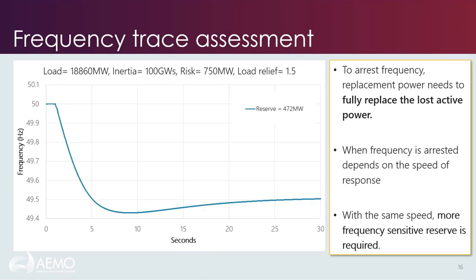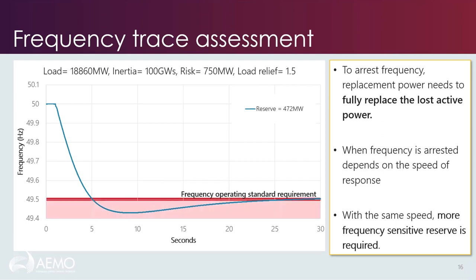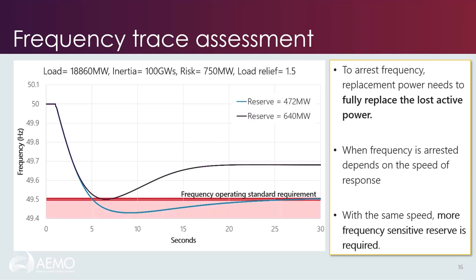From this model, we obtain a frequency response of the system, assessed against the frequency containment requirements of the Frequency Operating Standard, or FOS. Frequency was arrested on one particular run as we had enough reserve to fully replace the active power lost during the event. However, the curve drops into the red zone below the FOS requirement of 49.5 hertz before being arrested. If we then increase the amount of reserve, we now meet that FOS. This shows that with the same speed of response from our base reserve model, we need a larger amount of reserve both to arrest frequency and meet the FOS — and this iterative process determined how much reserve is required for a given set of system conditions.